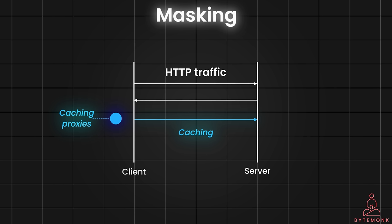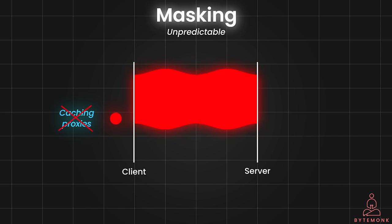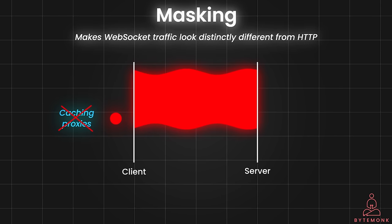However, WebSocket connections don't follow the traditional HTTP request-response pattern. Unmasked WebSocket data could be wrongly interpreted as HTTP content and cached, potentially leading to issues later when a real HTTP request is made. Masking obscures the data within WebSocket frames in a way that makes it unpredictable and very unlikely to resemble valid HTTP requests or responses, discouraging proxies and other intermediaries from attempting to cache or modify the data. Masking basically makes WebSocket traffic look distinctly different from HTTP, discouraging incorrect interpretation or manipulation.